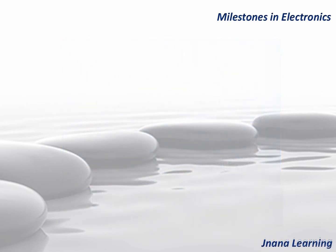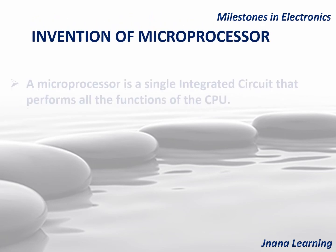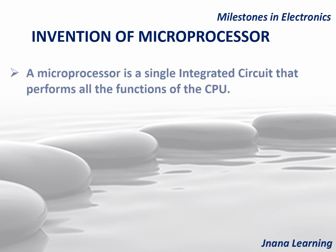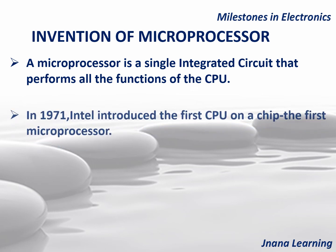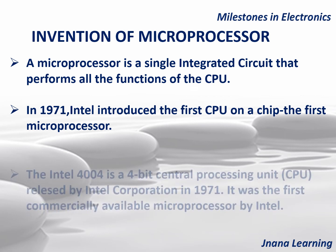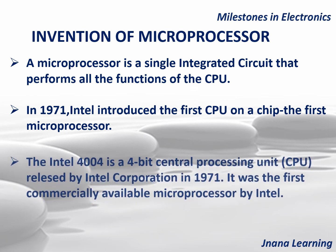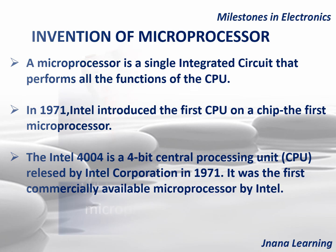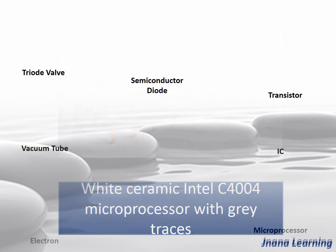Finally, the invention of the microprocessor — a single integrated circuit that performs all the functions of a CPU (central processing unit). In 1971, Intel introduced the first CPU on a chip. The Intel 4004 is a 4-bit central processing unit released by Intel Corporation in 1971. It was the first commercially available microprocessor by Intel.